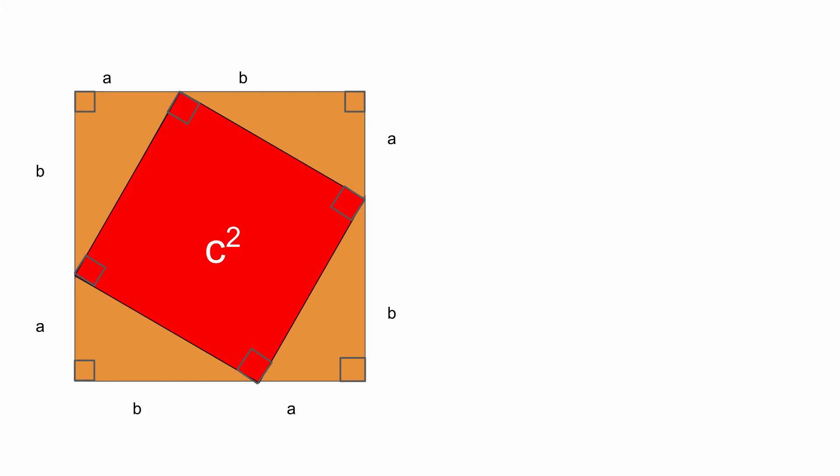I drew this diagram by basically drawing out the square that has side length c, and making copies of the original triangle to go along with this square.